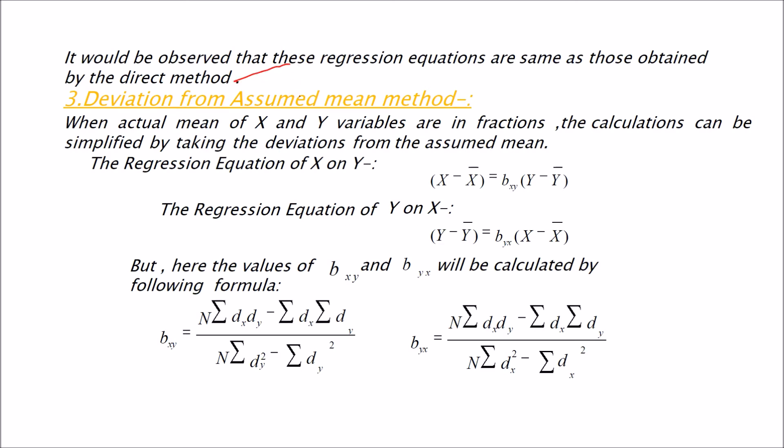Let us come to the third method, that is the deviation from assumed mean method. Why this? Again we want this calculation to be reduced somewhat more. First intention is this. And second is the actual mean of X and Y, they are coming in fractions. We don't want to deal with the fractions. So we assume by ourselves the mean.